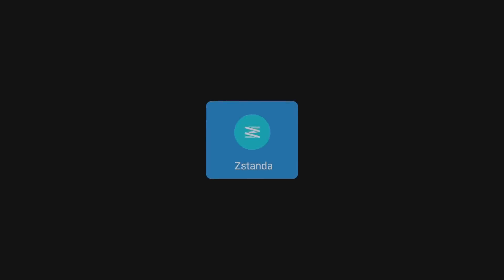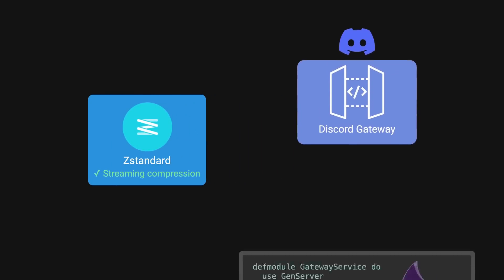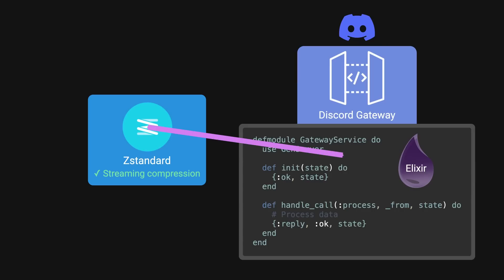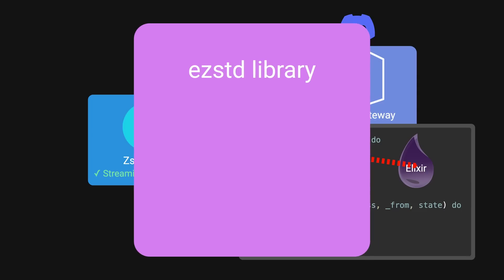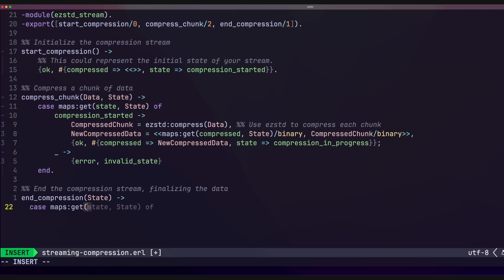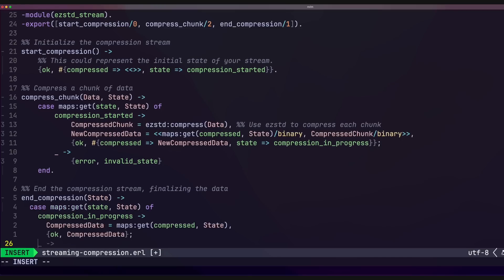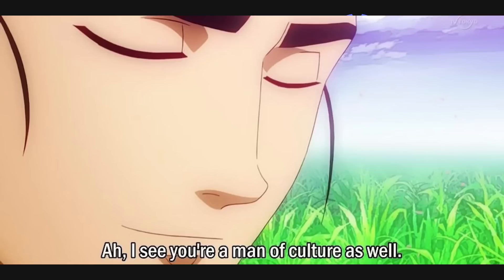While ZStandard supported streaming compression, Discord's gateway service was written in Elixir, and they couldn't find any Elixir bindings that offered this functionality. There was a ZStandard library — ZStandard bindings for Erlang — but it only supported dictionary and not streaming capabilities. To overcome this limitation, the team actually forked the repo and added streaming support. They later contributed back this enhancement to the original project. Truly a company of culture.